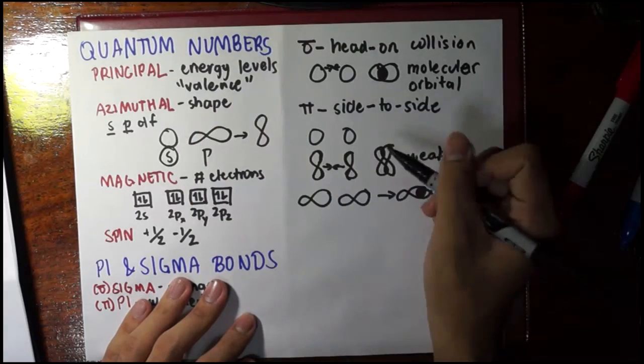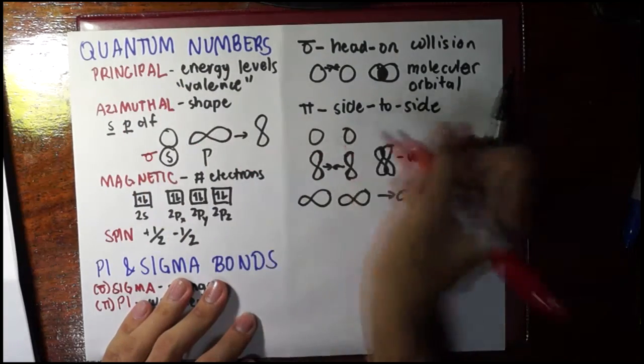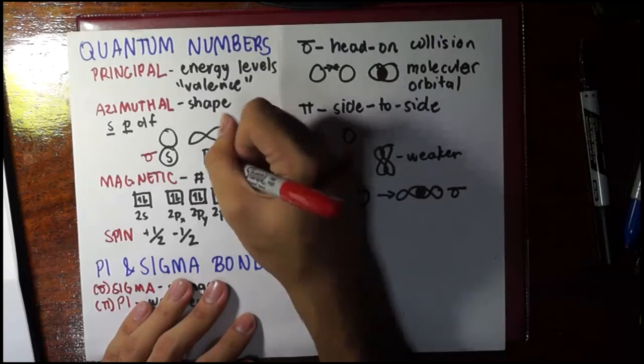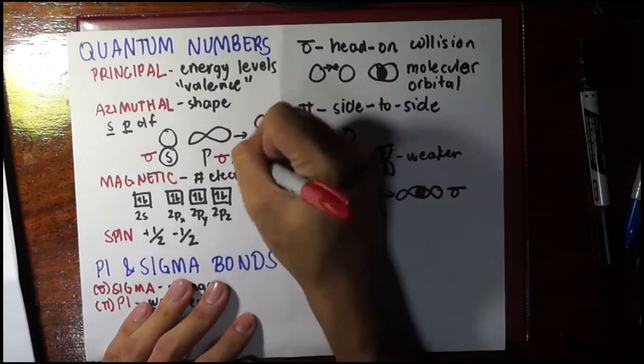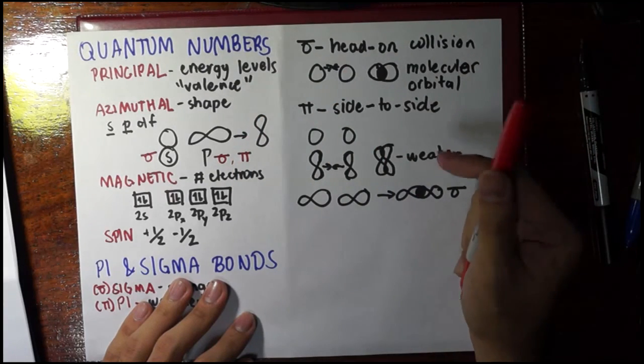So we get from here that s orbitals can only have sigma bonds because they always collide head-on, whereas for the p orbitals, they can collide to form a sigma bond or they can go side-to-side to form a pi bond.